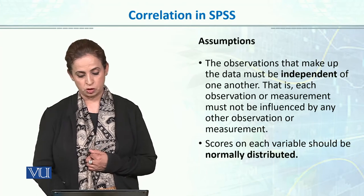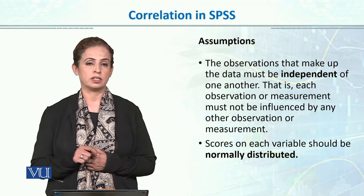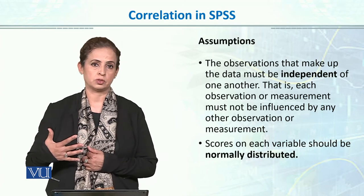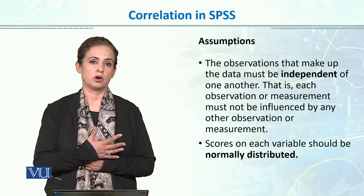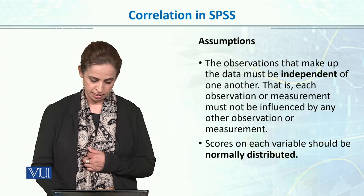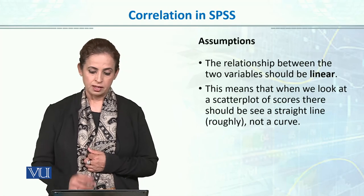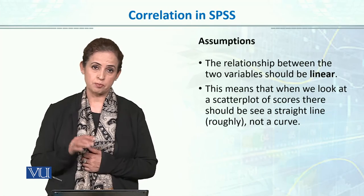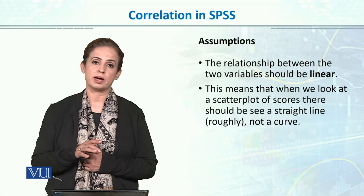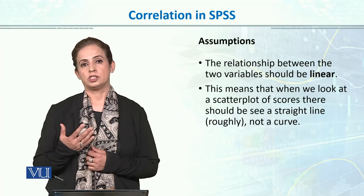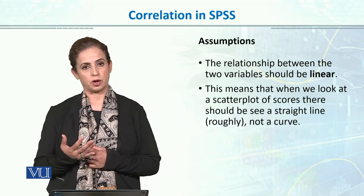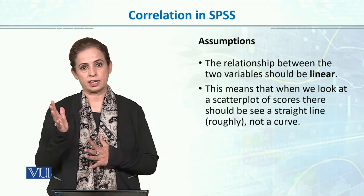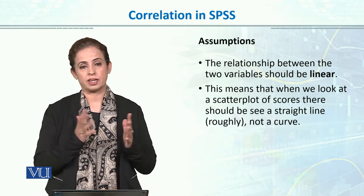The fourth assumption is that the scores on each variable should be normally distributed — our underlying distribution must be normal. This is the assumption for every parametric test. The fifth assumption is that the relationship between the two variables should be linear. When we use Pearson product moment, we assume that the two variables have a linear relationship, whether positive or negative.